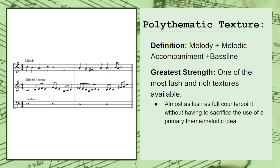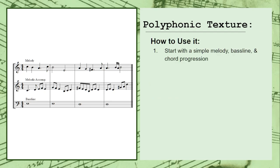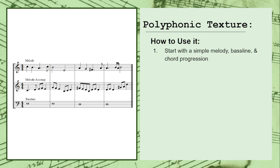You can use the polythematic texture by starting with a simple melody, bass line, and chord progression. Then you can use your sketch to write a contrapuntal melody in between your melody and bass line that uses mostly chordal tones. If you would like an additional voice, you can double your contrapuntal melody using a chordal texture style approach to help thicken up your texture.